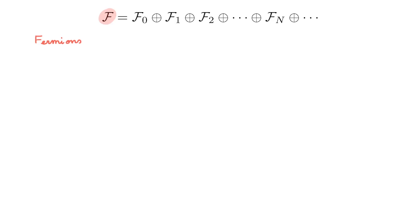This video covers the fermionic operators and there is a companion video that covers the bosonic case, so you should also check that out. We start with the Fock space F for fermions, made by the direct sum over all n-particle totally anti-symmetric spaces. We consider a set of states u forming a basis for a single particle state space V.